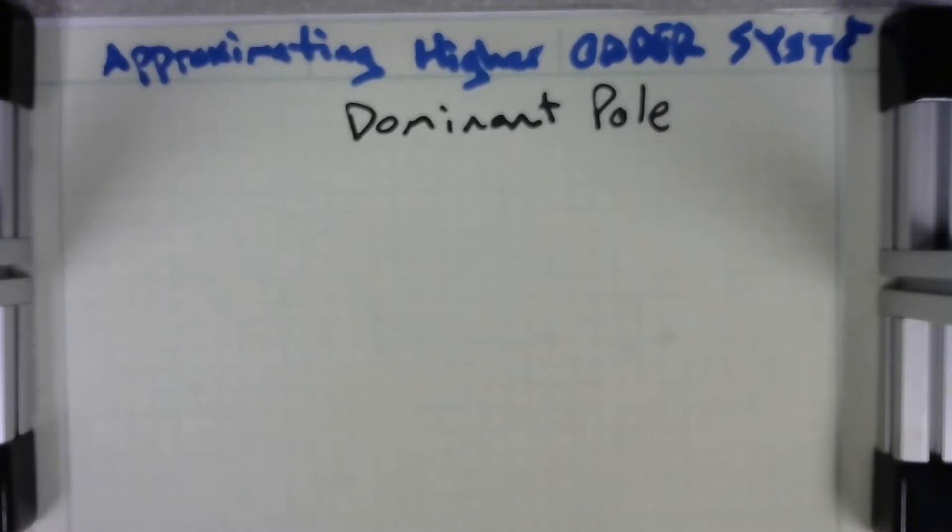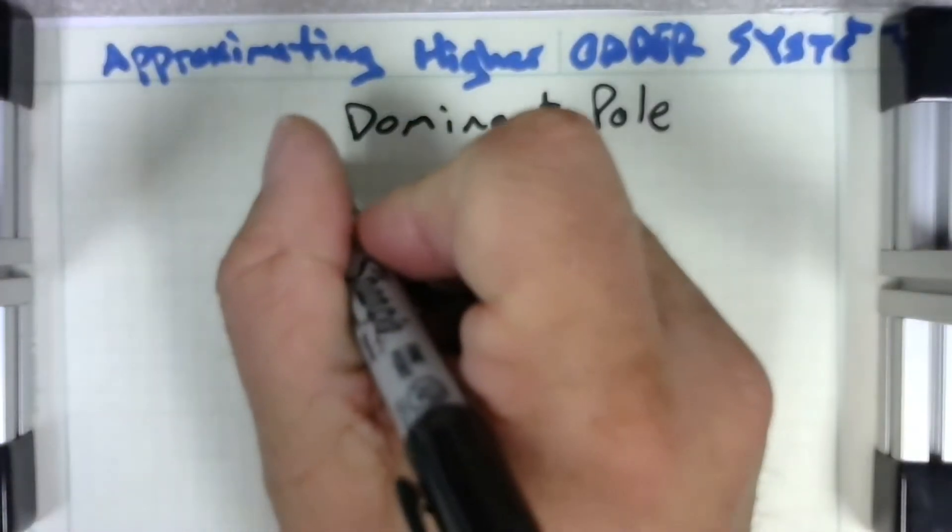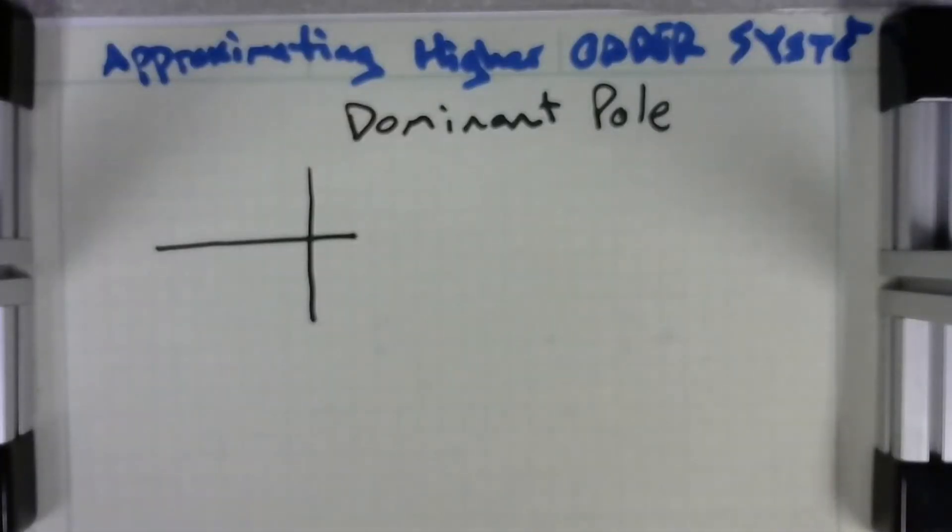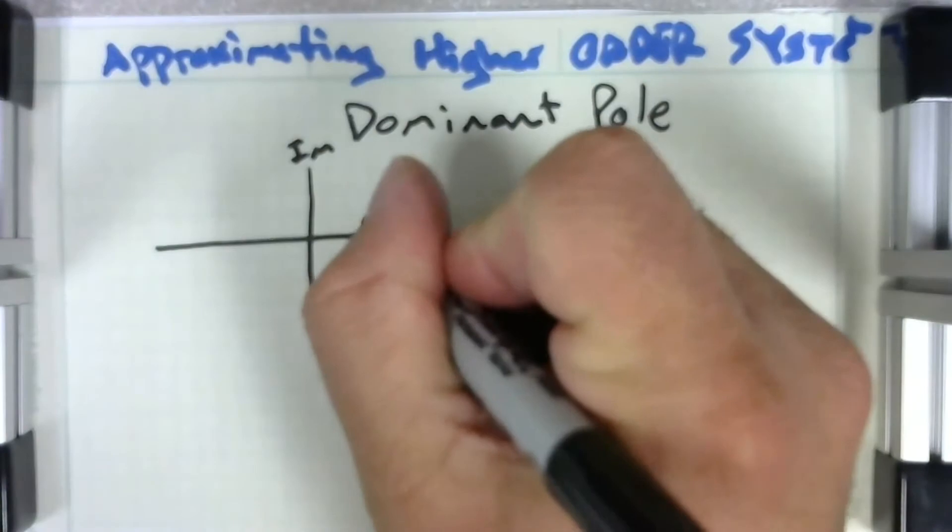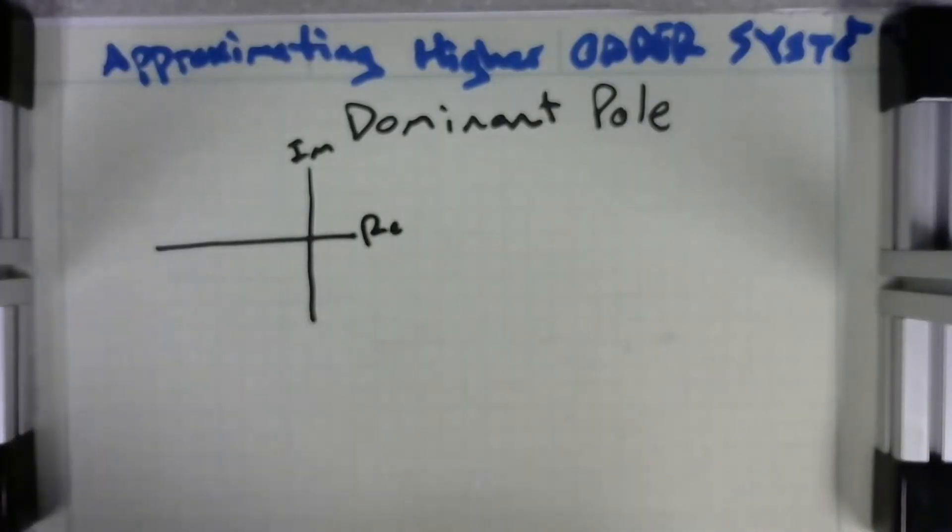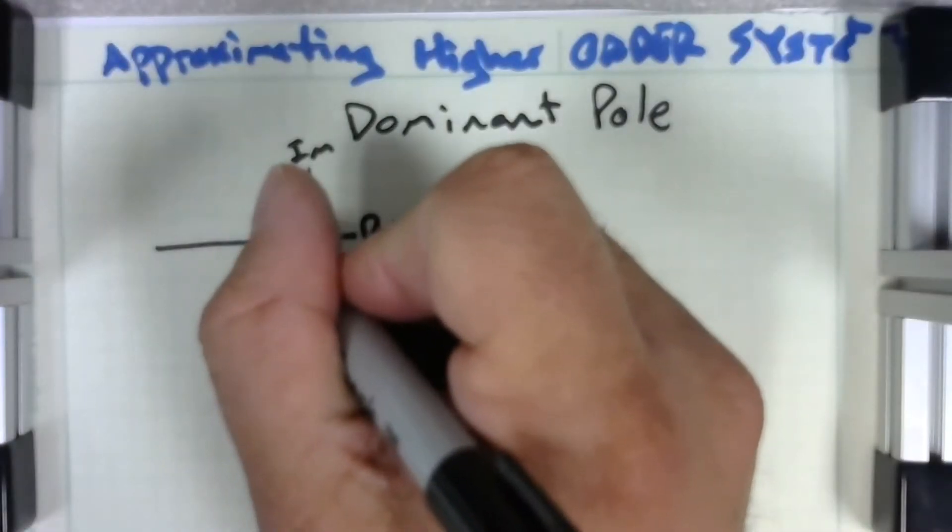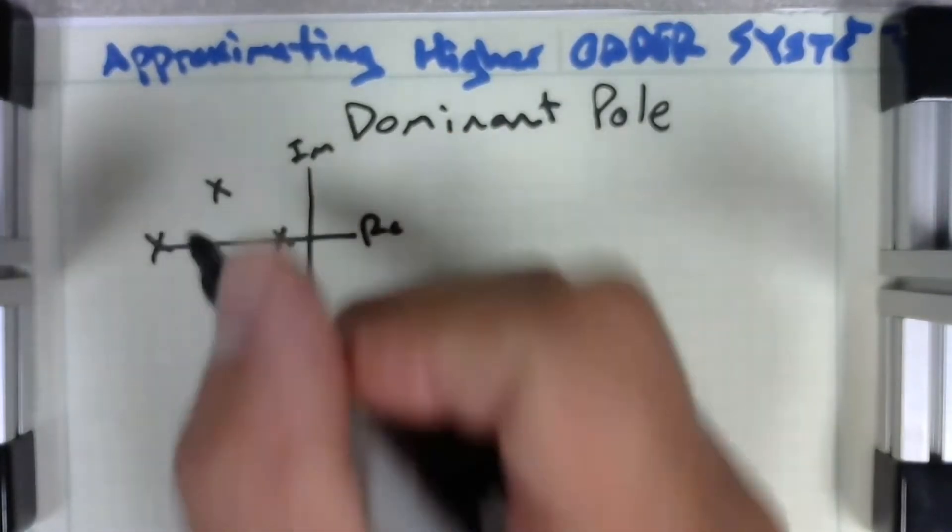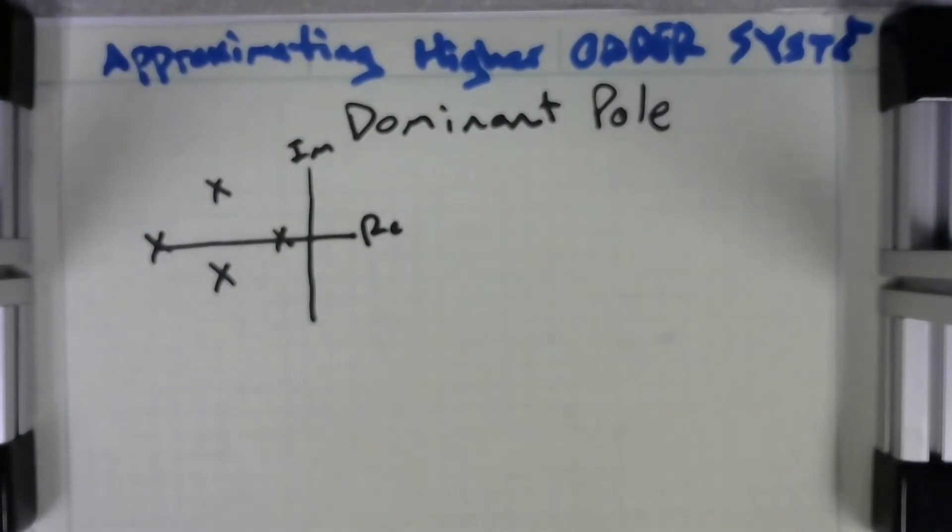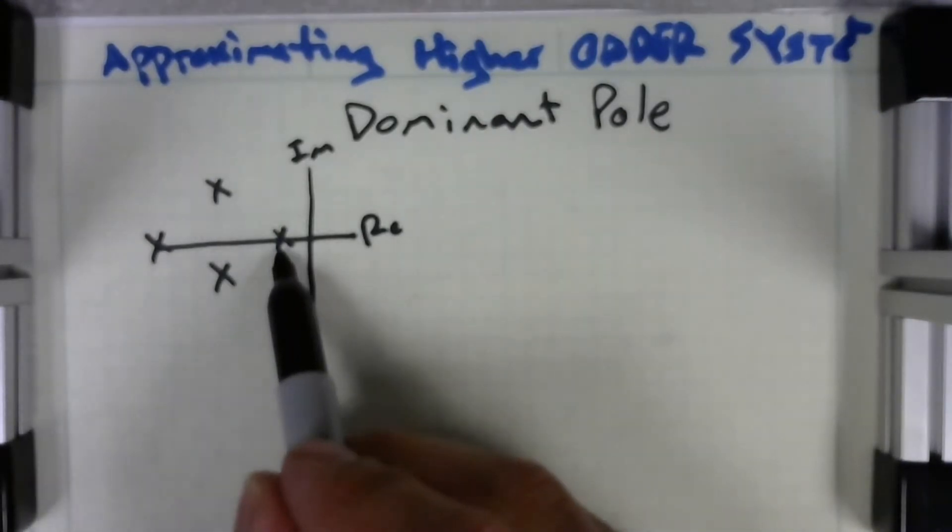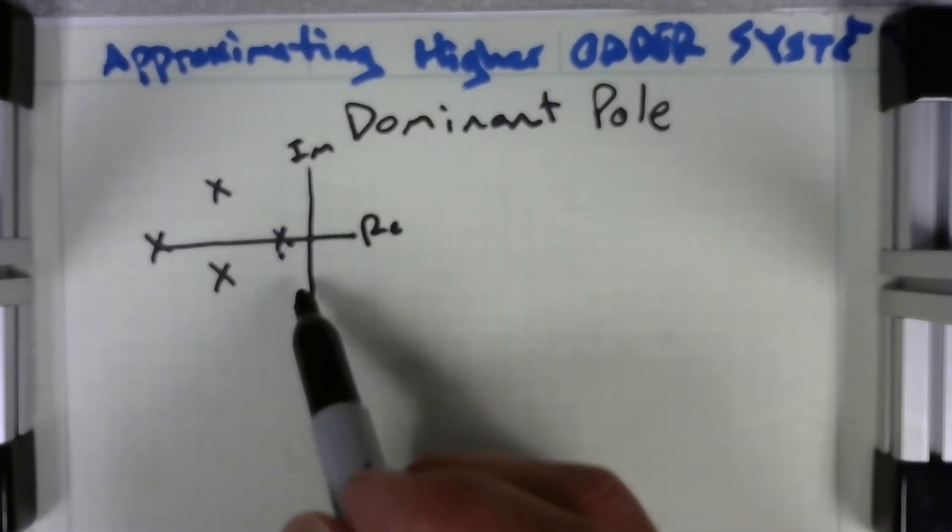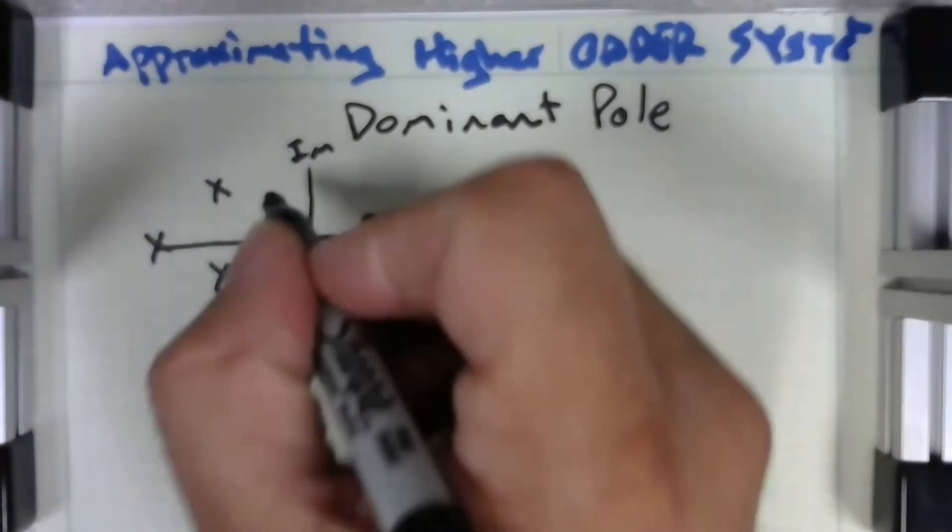What is the dominant pole and how do we approximate using that information? Well, dominant pole is easy enough to understand. If you have a system here and it has multiple poles, this is the s-plane, so you have your imaginary and real axes. You have a pole right here and then you have poles back here and maybe a pole right here. Well, this pole right here is going to be the dominant pole. It is closer to the imaginary axis.